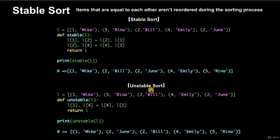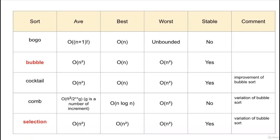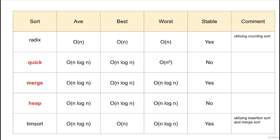Now let's look at an unstable sort. With the same list, after running an unstable sort function, the result is: (1, Mike), (2, June), (2, Bill), (4, Emily), (5, Rena). Looking at the 2s — this time it's June first and then Bill, so the order has been reversed. That's why this is an unstable sort. In our next lectures, we'll be covering the different types of sorts, which are the foundation for all your coding needs.